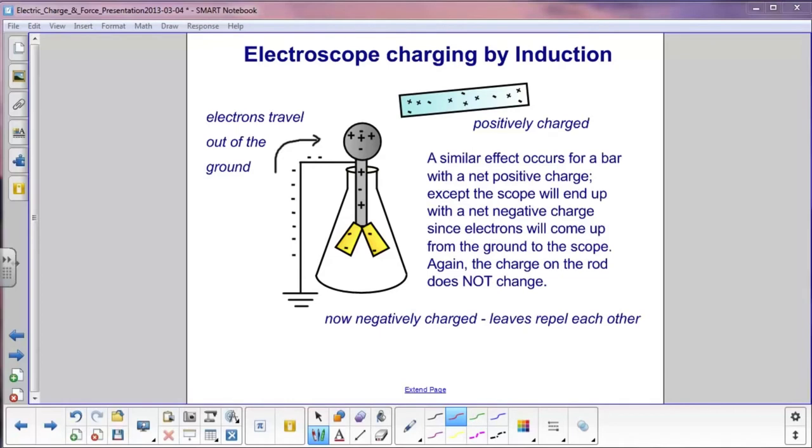We can also use a positively charged rod for induction. So, over here we have a positively charged rod. We bring it near the top of the electroscope. In this case, electrons are attracted from the earth. Remember, the earth has an infinite source of electrons, and it can either accept them or donate them.